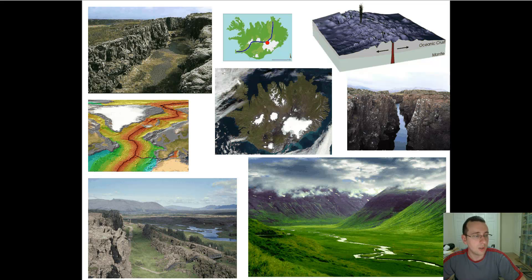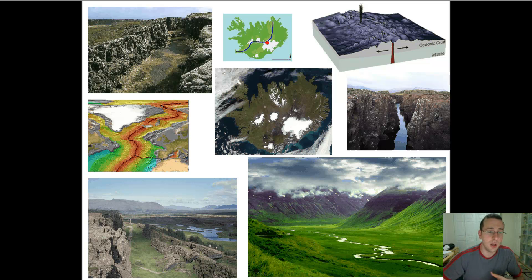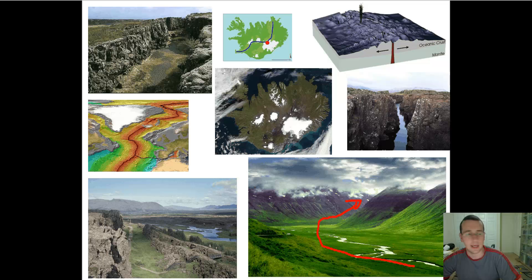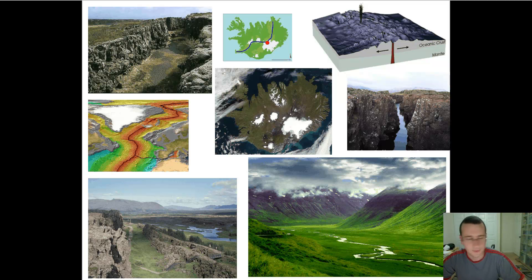Earthquakes will also happen on established rifts, such as the one in Iceland, which is a visible mid-ocean ridge. Iceland has so much volcanic activity it's considered a large igneous province — not because of a hot spot, but because of massive magma seeping through the surface along the mid-ocean ridge of the Atlantic. You see another rift valley forming in Iceland with horsts and grabens, just like in Africa, except this is an established rift that's been there for at least 300 million years, contributing to the separation of Pangaea.